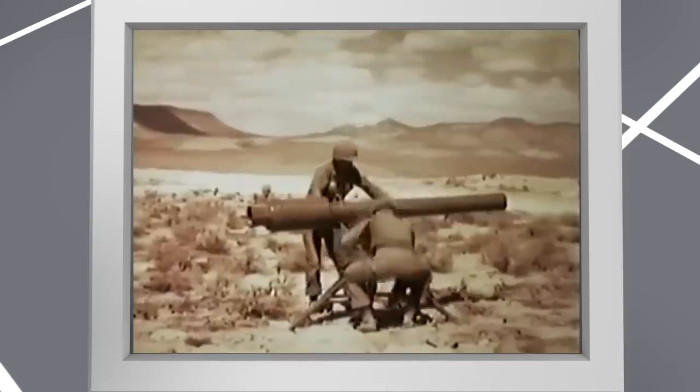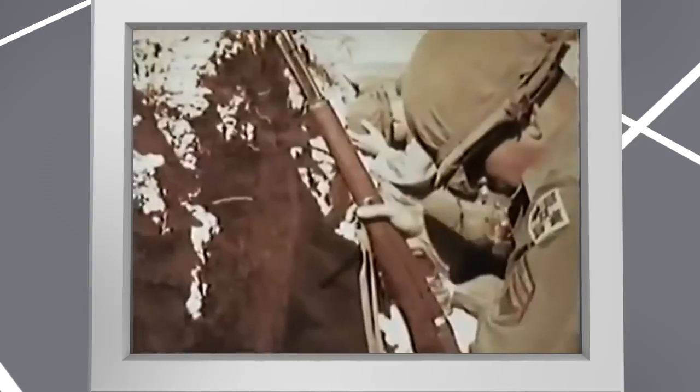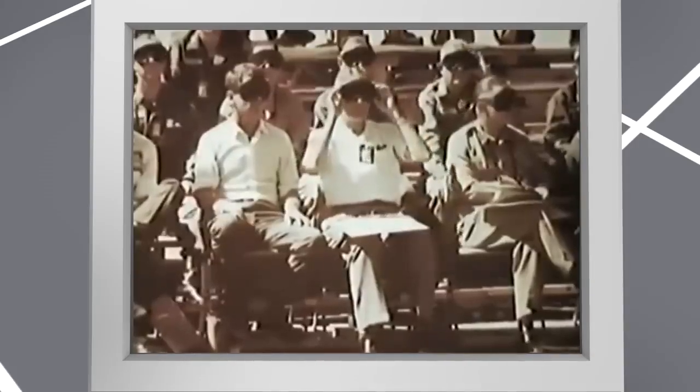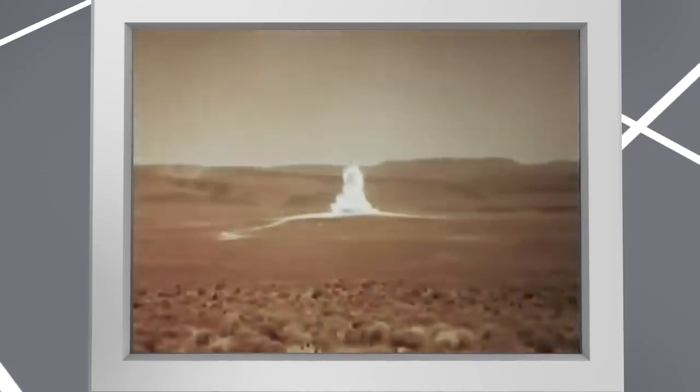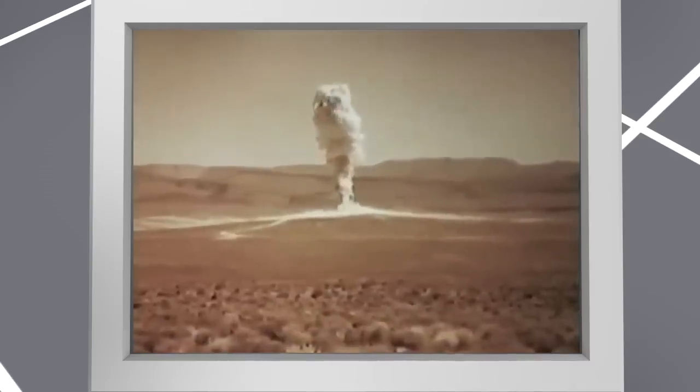July 7, 1962, Nevada Proving Ground, USA. The Army is preparing to test the new 155mm M29 recoilless cannon, better known as the Davy Crockett. A Mark 54 nuclear munition weighing about 35 kg was mounted at the end of the gun barrel. The gun was fired at the position of a simulated enemy at a distance of one and a half kilometers.